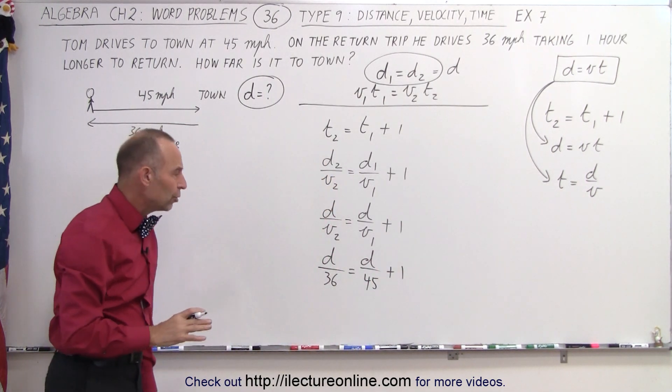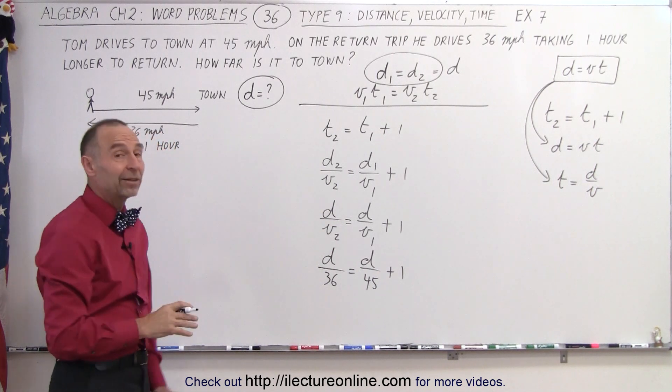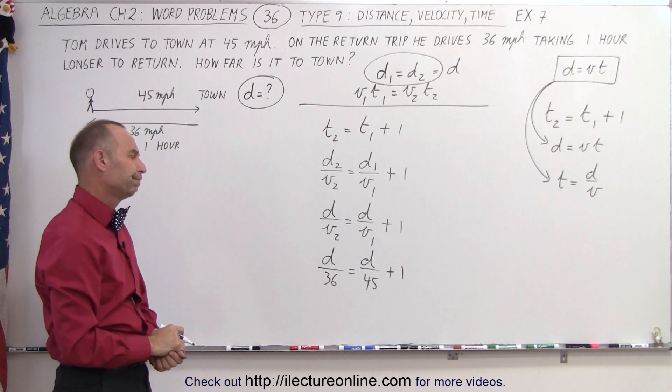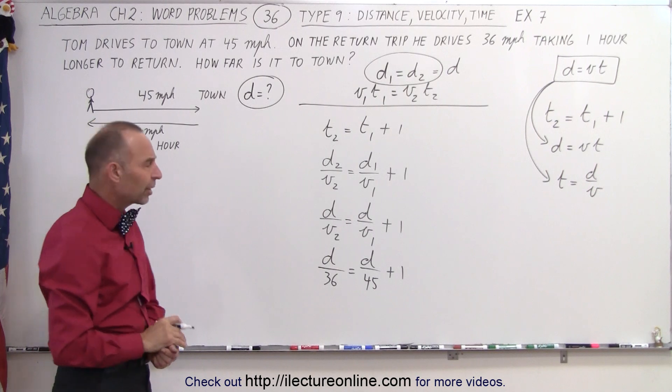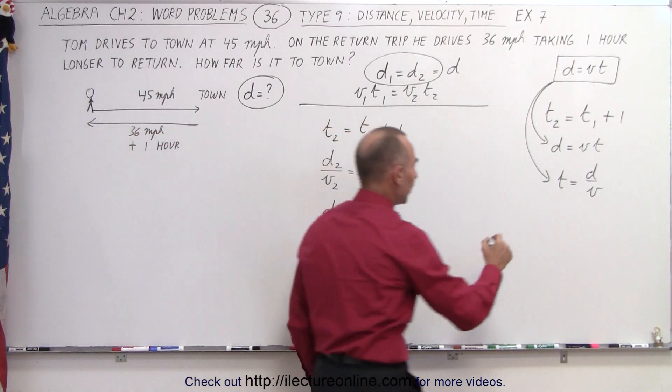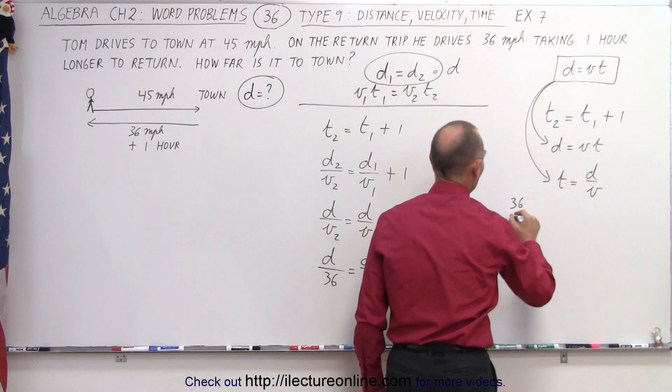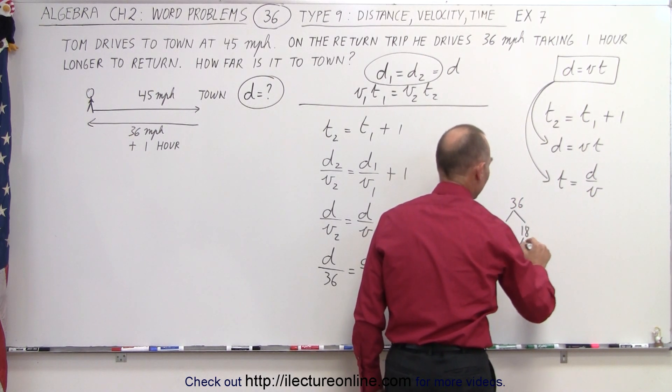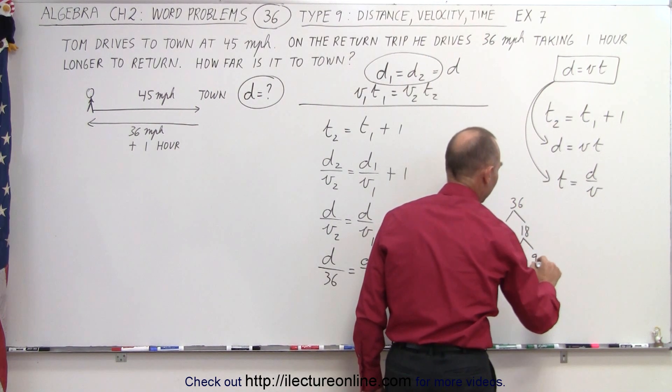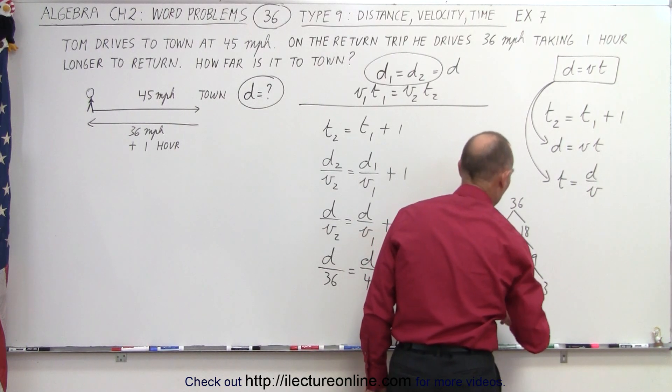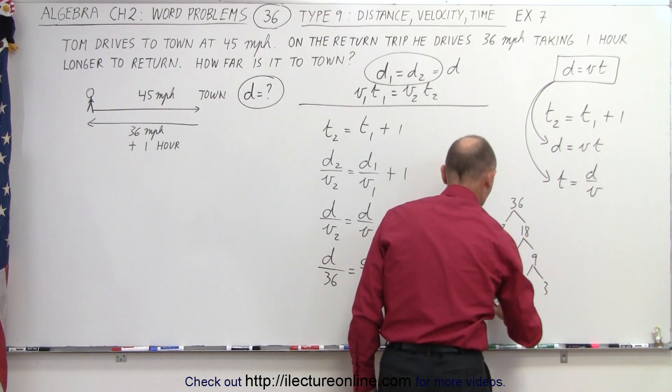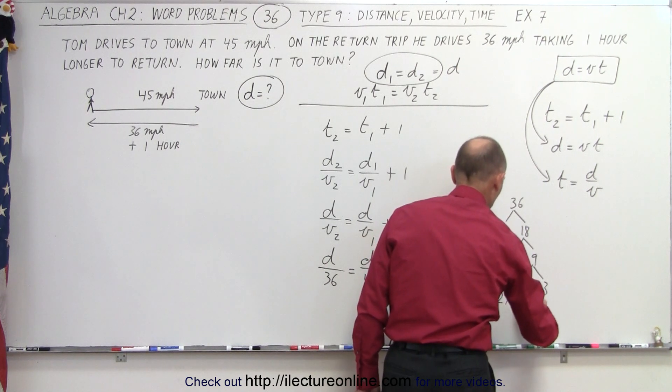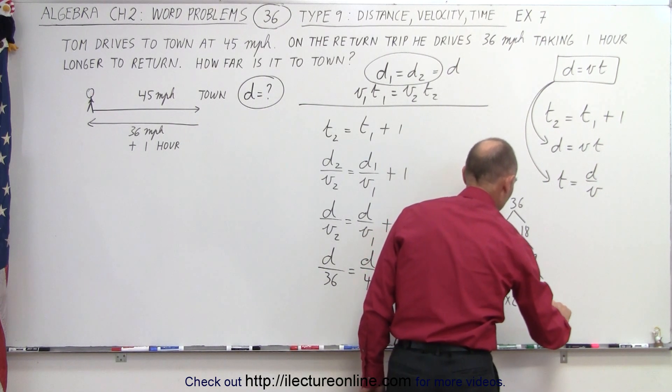And then the only thing we need to do to solve that is find the lowest common denominator. How do we find the lowest common denominator? Well, our method is as follows. We take 36, we divide it by 2 because it's even, that gives us 18, divided by 2, that gives us 9, then divide by 3, we get 3. In other words, 36 is equal to 2 times 2 times 3 times 3.